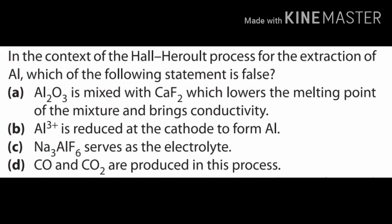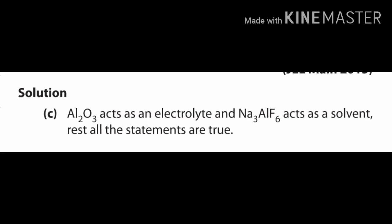Next question is about the Hall-Héroult process — find the incorrect statement from the four options. Answer: the incorrect statement is C. Al₂O₃ acts as electrolyte, not Na₃AlF₆. Na₃AlF₆ is cryolite, which is used as a solvent, not as electrolyte — that is why the statement is wrong. This is also a previous year question.